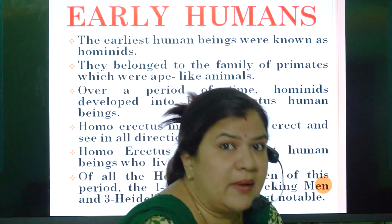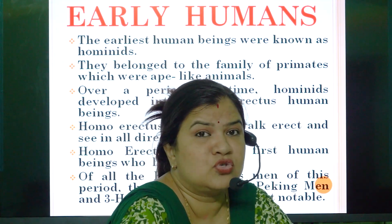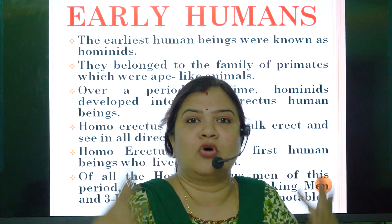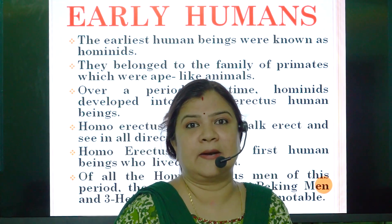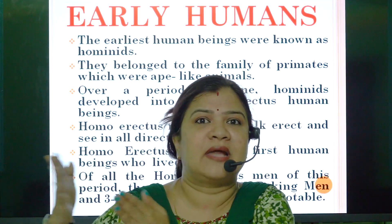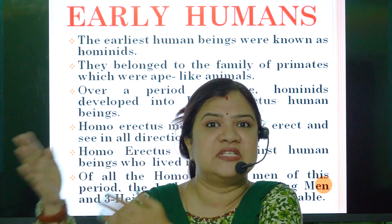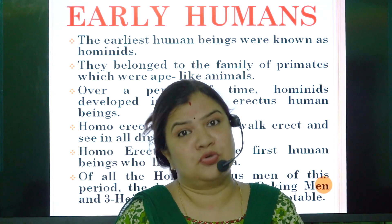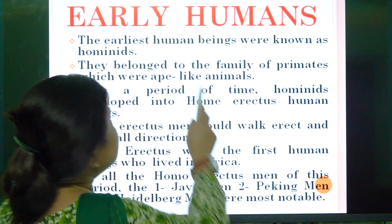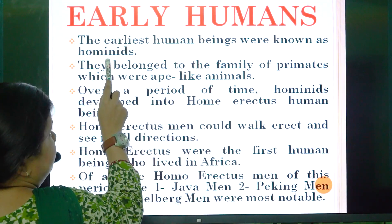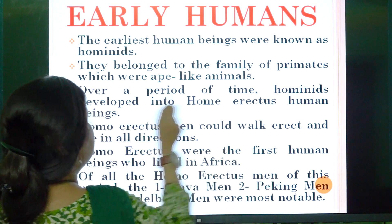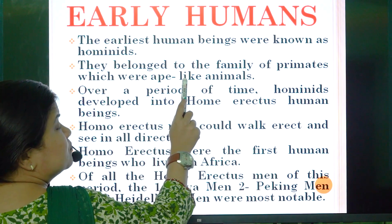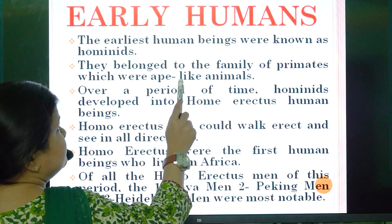Early men, called Hominids, were bent forward and walked on four limbs. They had a lot of hair growth all over their bodies. Over a period of time, man went through various changes and finally assumed the form we see today. Hominids belonged to the family of primates — ape-like animals resembling a chimpanzee or monkey.